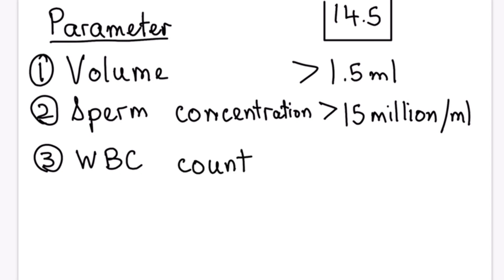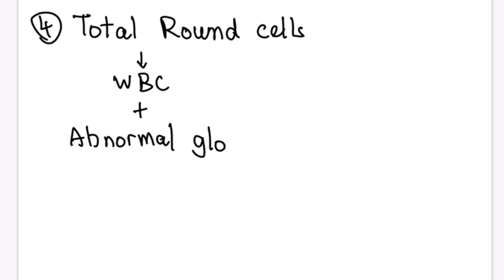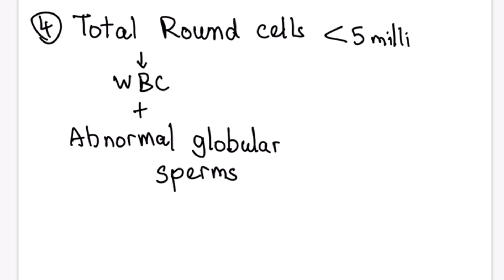The third parameter is WBC count, which must be less than 1 million per ml. The fourth parameter is total round cells, which includes WBC plus abnormal globular sperms. Total round cells must be less than 5 million per ml — the 5 also comes from our number 14.5.